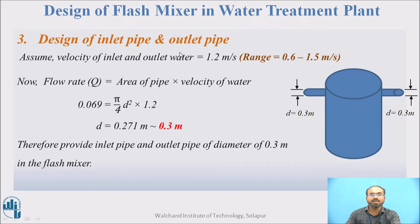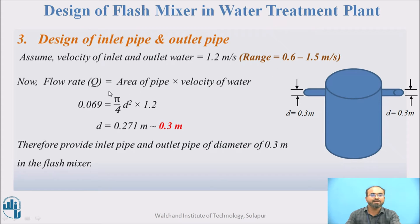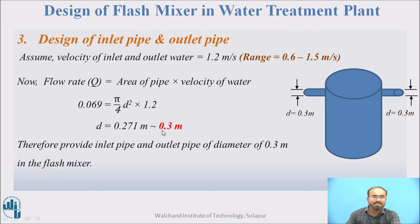For the inlet and outlet pipe design: the velocity of influent and effluent water is generally kept the same — I am taking 1.2 meter per second, within the range of 0.6 to 1.5 meter per second. Using Q equals area multiplied by velocity, and knowing Q is 0.0694 m³/s, we solve for pipe diameter: 0.0694 equals (pi/4) d² multiplied by 1.2, giving d equals 0.271 meter. We round up to 0.3 meter. So the inlet and outlet pipe diameter is 0.3 meter.